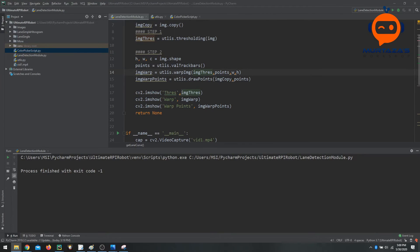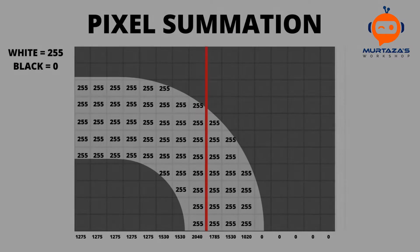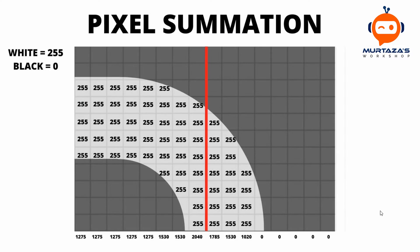So now we are moving to step number 3, which is our main step. Here we are going to find the curve in our lane. Let's look at the basic concept first and then we are going to write down the code.